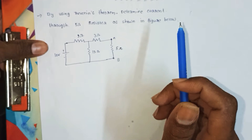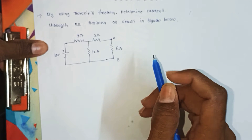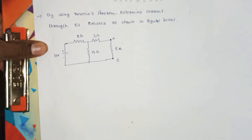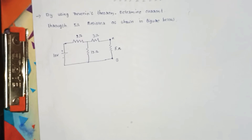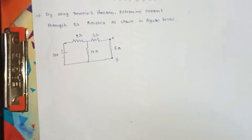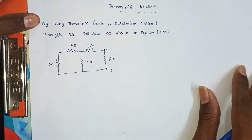Where VTH is the open-circuited voltage measured between the terminals, and RTH is the Thevenin equivalent resistance measured by replacing all the voltage sources as short circuit and all the current sources as open circuit. So this is the Thevenin equivalent circuit.